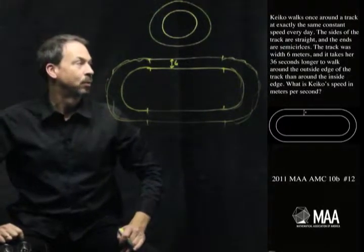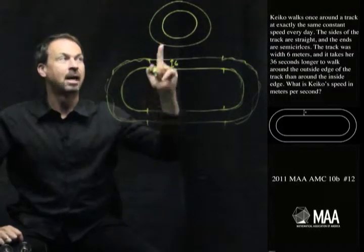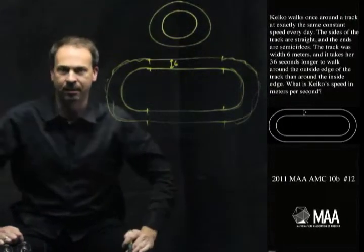Speed, distance. Speed is distance per time. So I've got a time, 36 seconds. I need to find speed. I guess I need to know the distance. What's the extra distance she's walking of the outer circle compared to the inner circle?